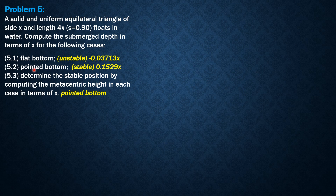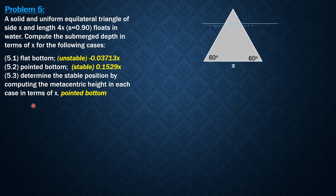The cases are: flat bottom, pointed bottom, and for the third question, determine the stable position by computing the metacentric height in each case in terms of x. For the flat bottom case, the dimensions of the equilateral triangle are all x, so the angles are 60 degrees. We will call the width of the waterline section as y, so everything here would also be y.